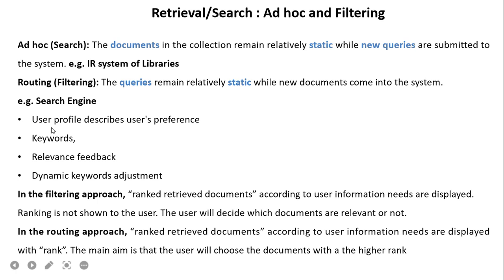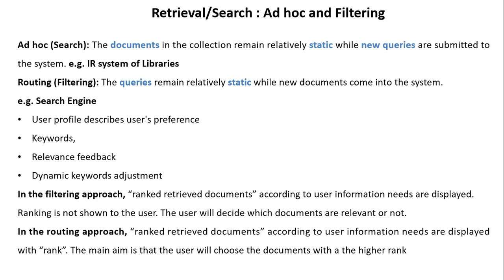The user profile describes user preferences — that is, user choices or interests — using keywords and relevance feedback with dynamic keyword adjustment by local or global methods. In the filtering approach, ranked retrieved documents according to user information needs are displayed, but the ranking is not shown to the user explicitly; the user decides which documents are relevant. In the routing approach, ranked retrieved documents are displayed with a rank, and the main aim is that the user will choose the documents with the highest rank.